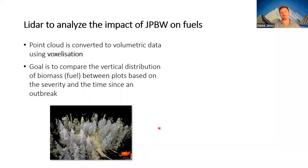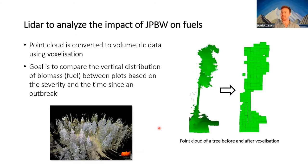One step we're taking to extract information from this data is converting point clouds into voxels — a process of voxelization where we divide the three-dimensional space occupied by all the points into a series of stacked cubes and count the number of points within each cube. It's essentially a three-dimensional pixel. Our goal is to compare the vertical distribution of biomass to get a sense of how vertical abundance and the connectivity between surface and crown changes with time since outbreak.